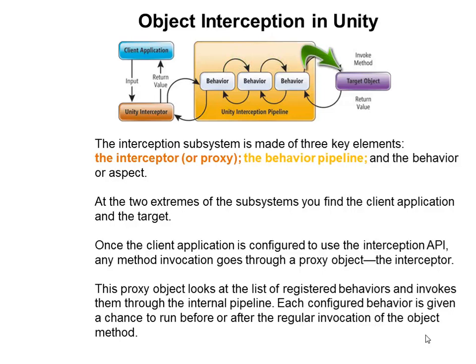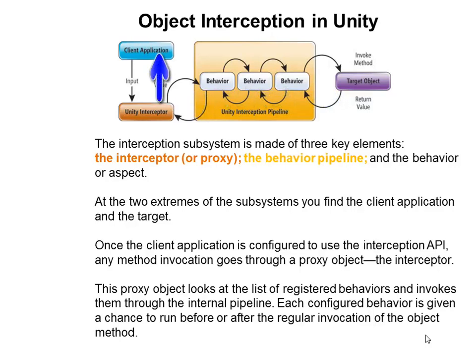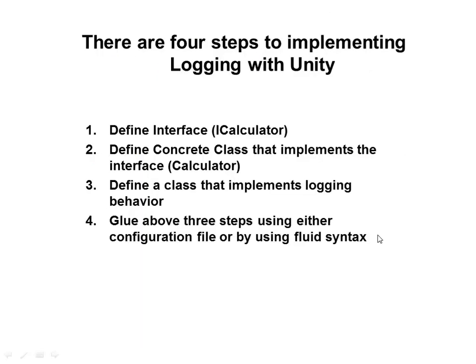Then it will invoke the target object, passing in the parameters that were passed by the client. The target object will be executed and return. Once returned, the result will be passed back to the behavior. The behavior will get a chance to execute once again, and finally the interceptor will receive the call and return the value to the client application. There are four steps to implementing logging behavior in Unity.